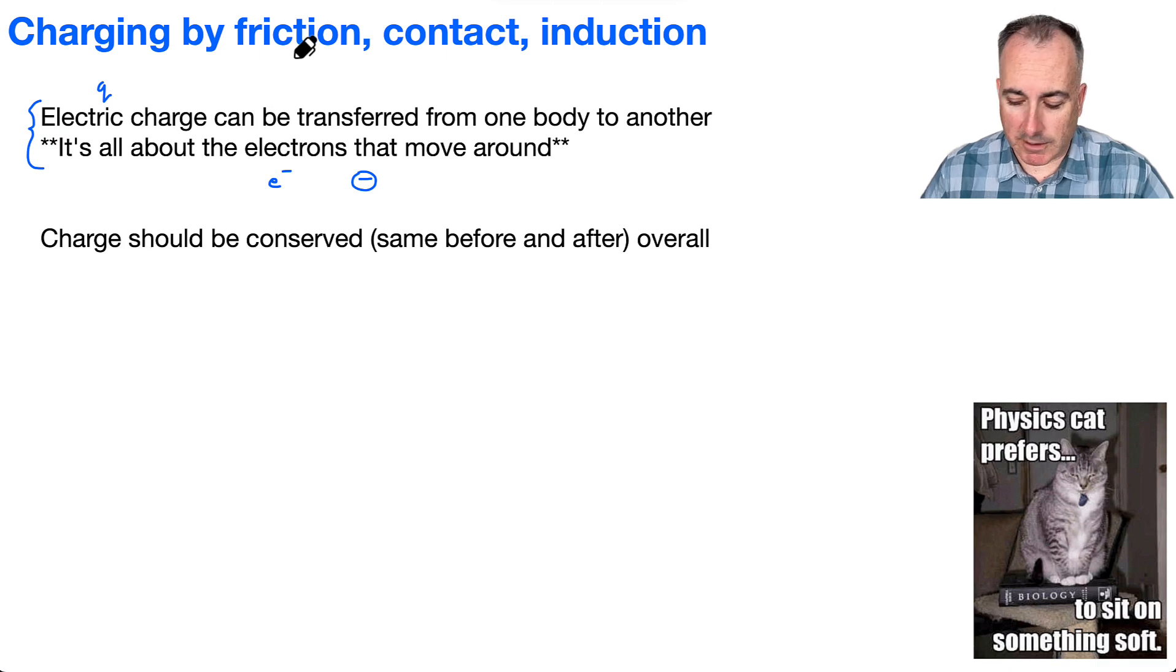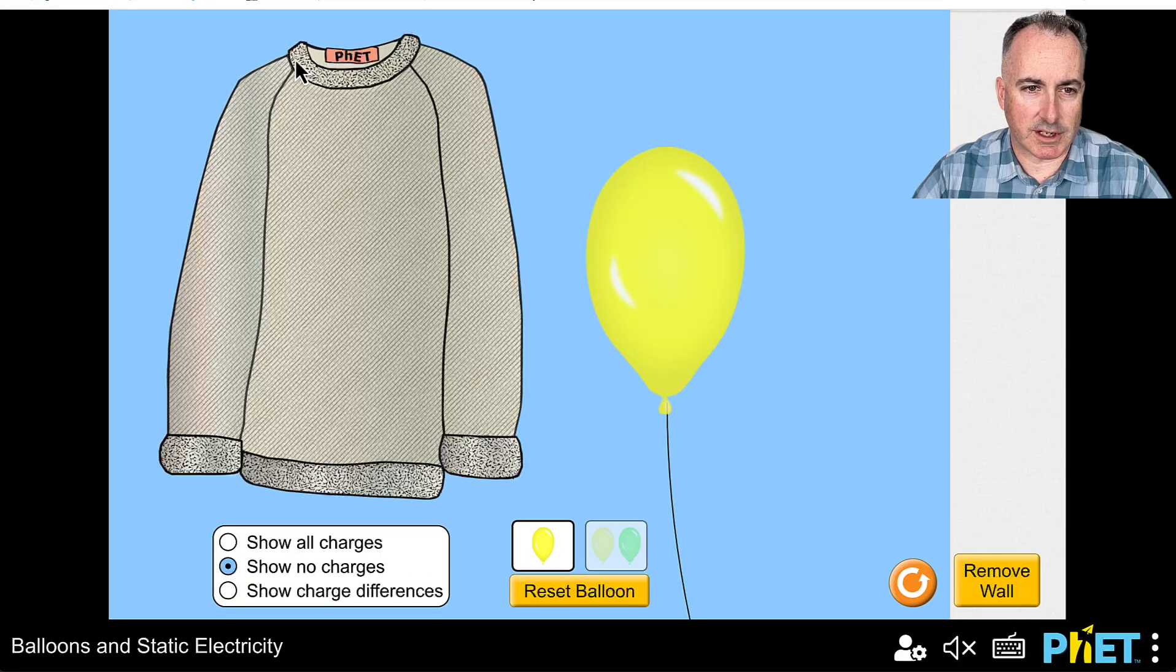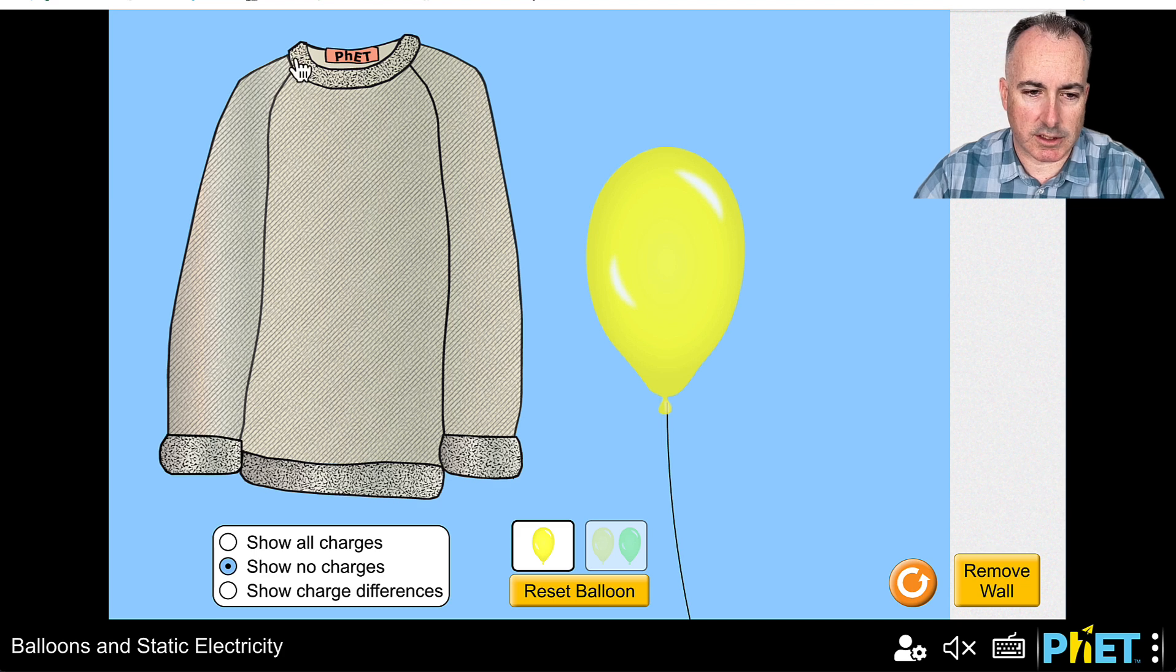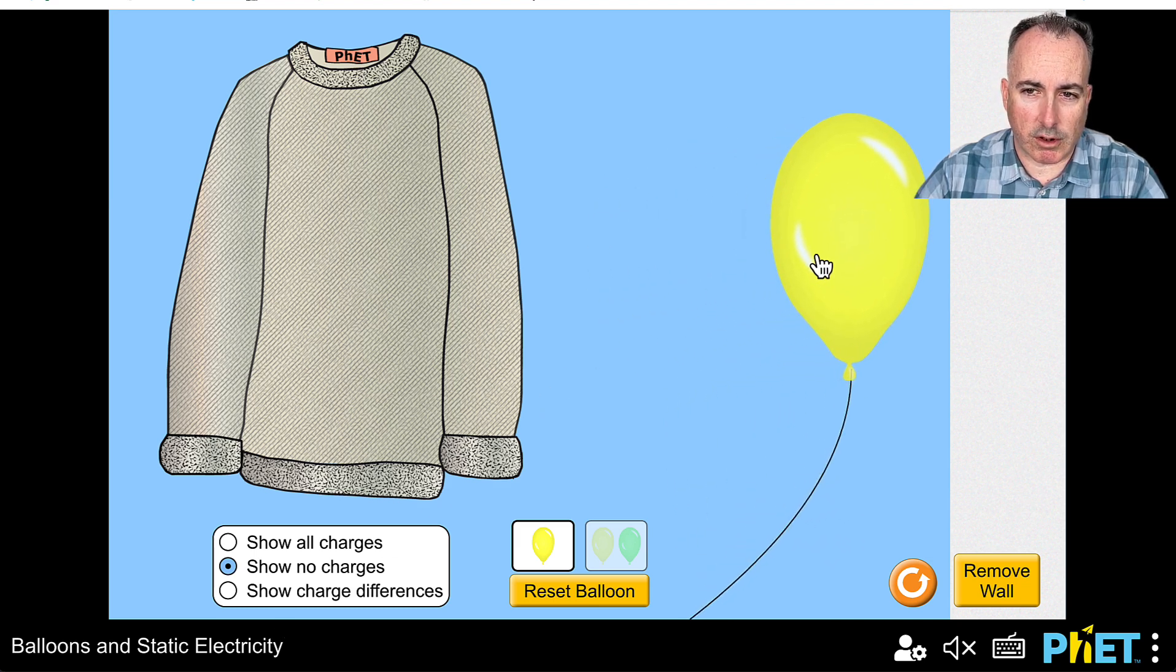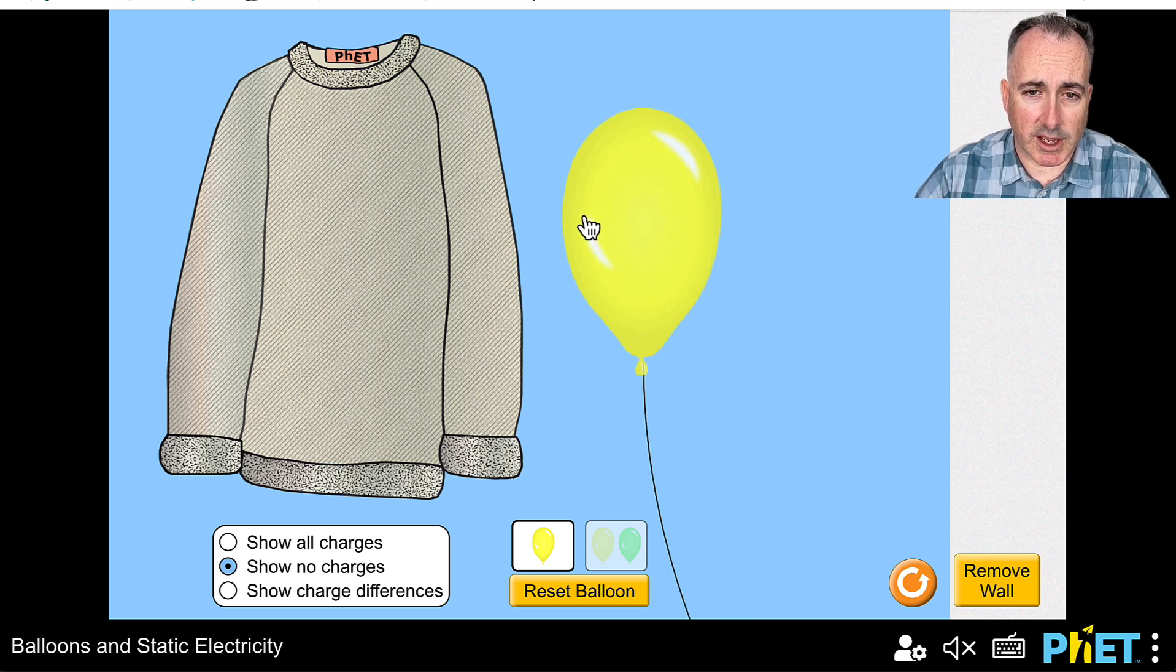All right, let's take a look first at charging by friction. And before we go too deep into that, I actually want to show you just this little animation here. So again, it's by PHET, and it's their balloons and static electricity one. So I've started on purpose not showing you any of the charges. We have a balloon. If I hold it near the wall, nothing happens. It's pretty neutral.